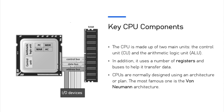On screen you can see a diagram showing a CPU connected by various buses to the RAM and I/O devices. The CPU consists of a control unit, arithmetic logic unit, and various registers like the PC, MDR, and the accumulator. We're going to be looking at all of these in a moment.